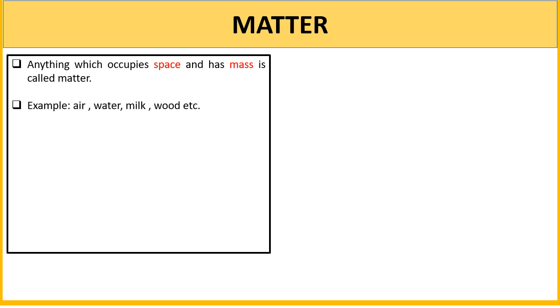There are many examples of matter: air, water, milk, wood, and so on. Everything that occupies space and has mass is matter. There are many examples around us.